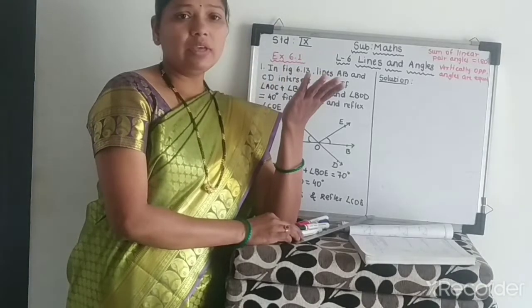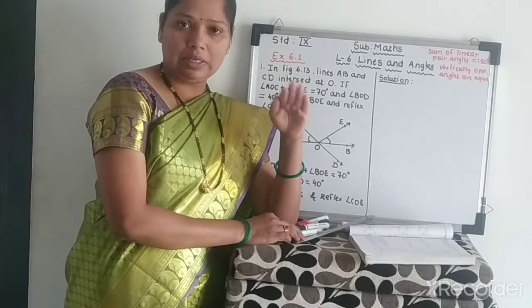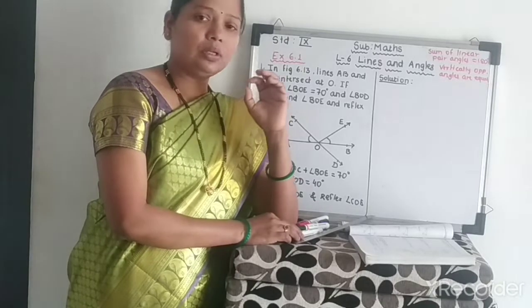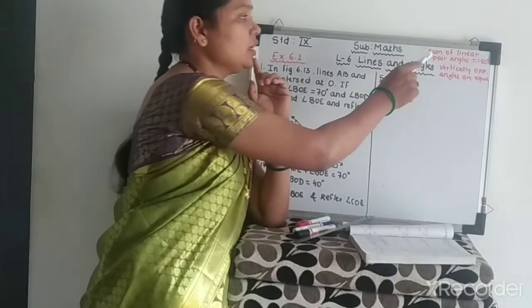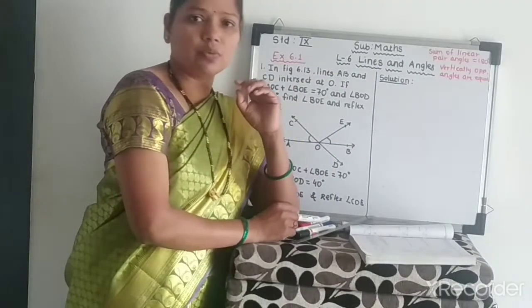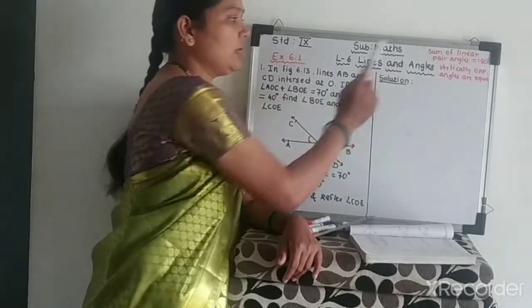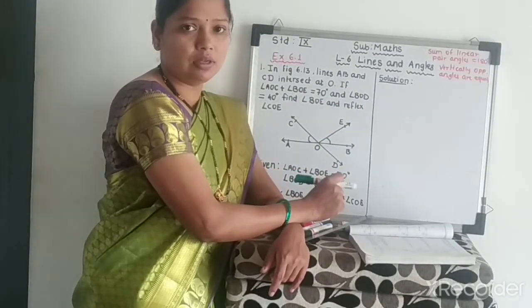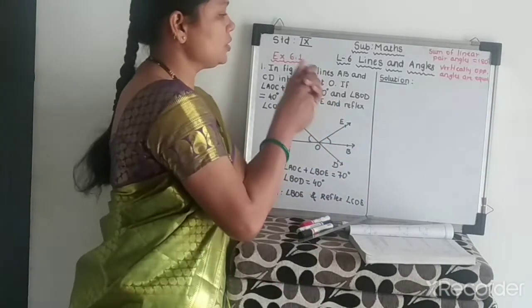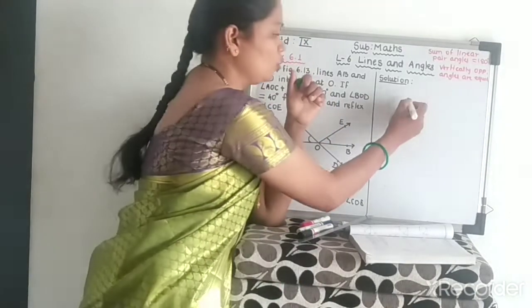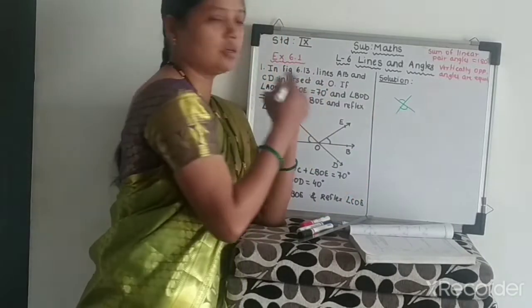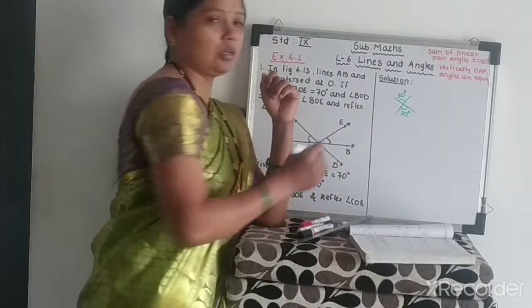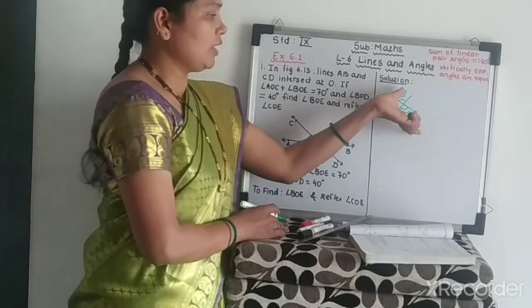We also covered linear pair angles and vertically opposite angles. For linear pair angles, the sum equals 180 degrees. For vertically opposite angles, they are equal — meaning their measurements are equal. For example, if one angle is 30 degrees, the opposite vertically opposite angle will also be 30 degrees.